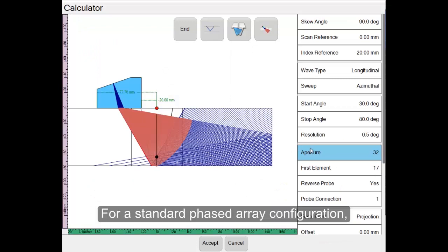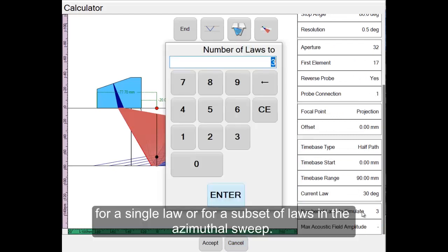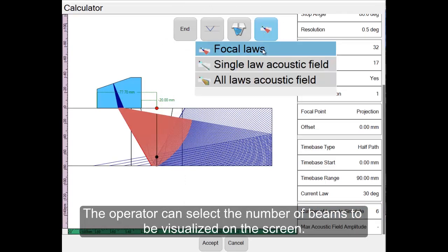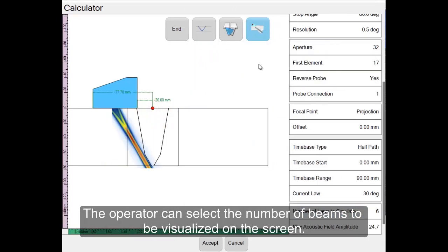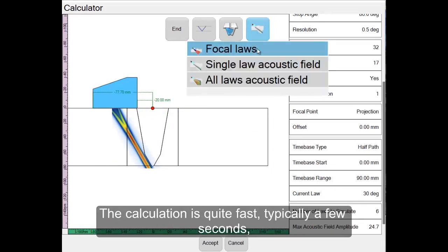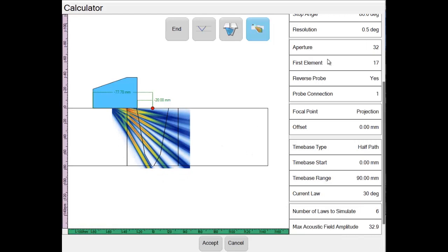For a standard phased array configuration, the acoustic field can be calculated and visualized for a single law or for a subset of laws in the azimuthal sweep. The operator can select the number of beams to be visualized on the screen. The calculation is quite fast, typically a few seconds, but it is not implemented as a mandatory step that can potentially slow down the inspection workflow.